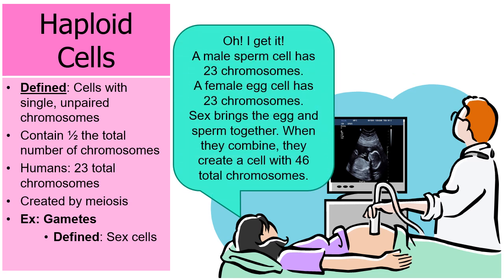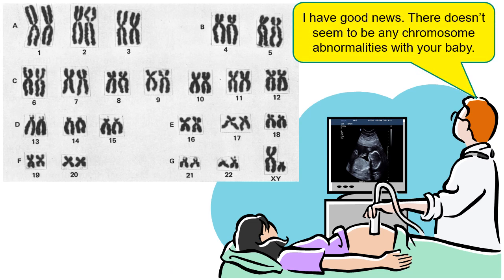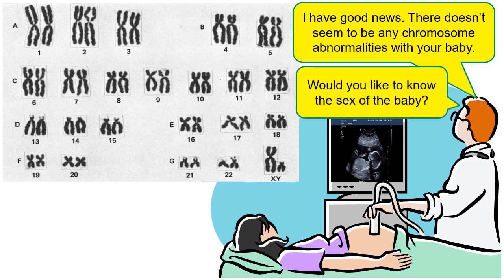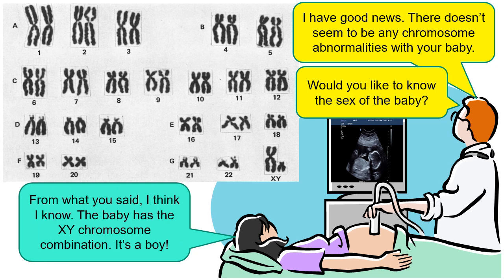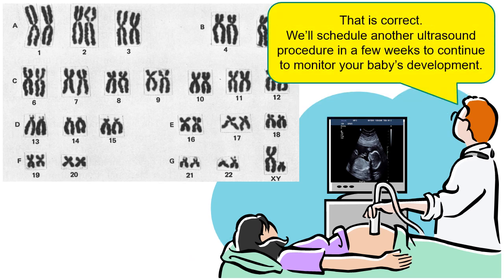Norma says: a male sperm cell has 23 chromosomes, a female egg cell has 23 chromosomes — when they combine they create a cell with 46 total chromosomes. The doctor confirms: precisely. A fertilized egg is called a zygote — it is the first cell of a new human. The doctor then says, I have good news: there don't seem to be any chromosome abnormalities with your baby. Would you like to know the sex? Norma deduces the baby has the XY chromosome combination — it's a boy. The doctor confirms and schedules another ultrasound in a few weeks.